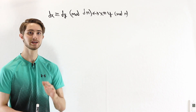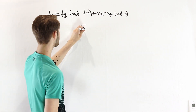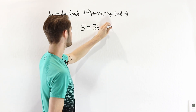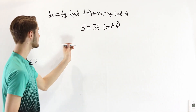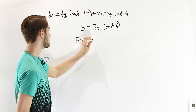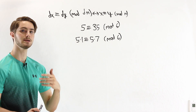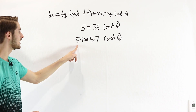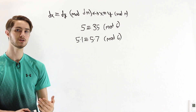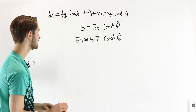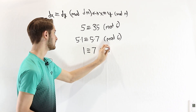Let's do some practice problems. The first problem: 5 ≡ 35 mod 6. Both numbers share the factor of 5, so we can rewrite this as 5×1 ≡ 5×7 mod 6. Can we cancel the 5? We can, because gcd(5, 6) = 1 — they share no common factors — so we apply the first cancellation rule and get 1 ≡ 7 mod 6.